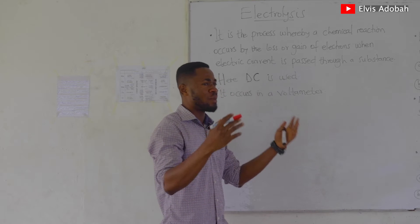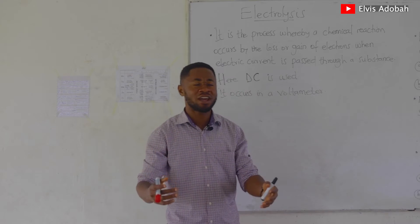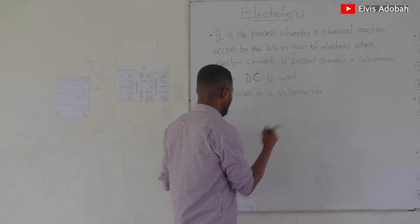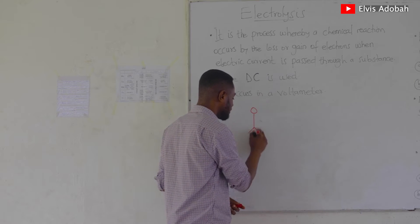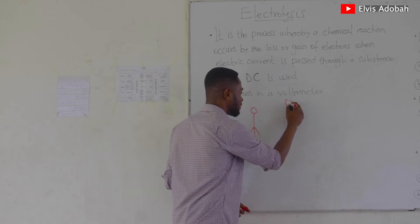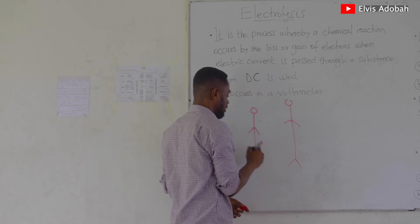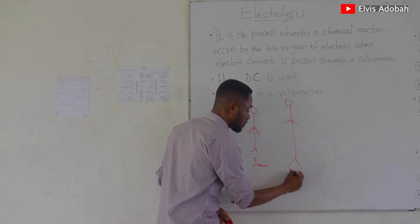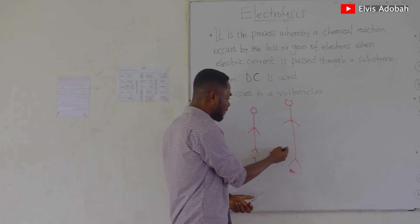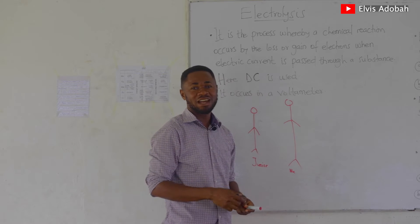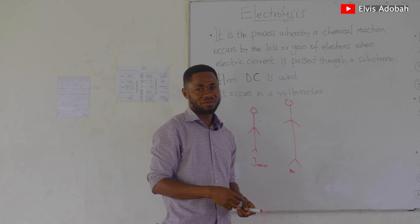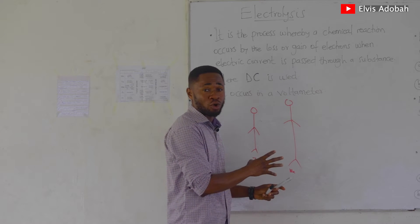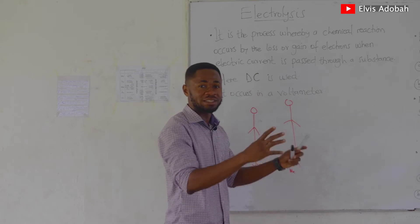We can think about the difference between the galvanic cell and the electrolytic cell like this. There is a kid called Junior, and I am bigger than Junior. Whenever I meet Junior I give Junior biscuits — I do so willingly, I'm not forced to do that. That is a classical example of a galvanic or voltaic cell.